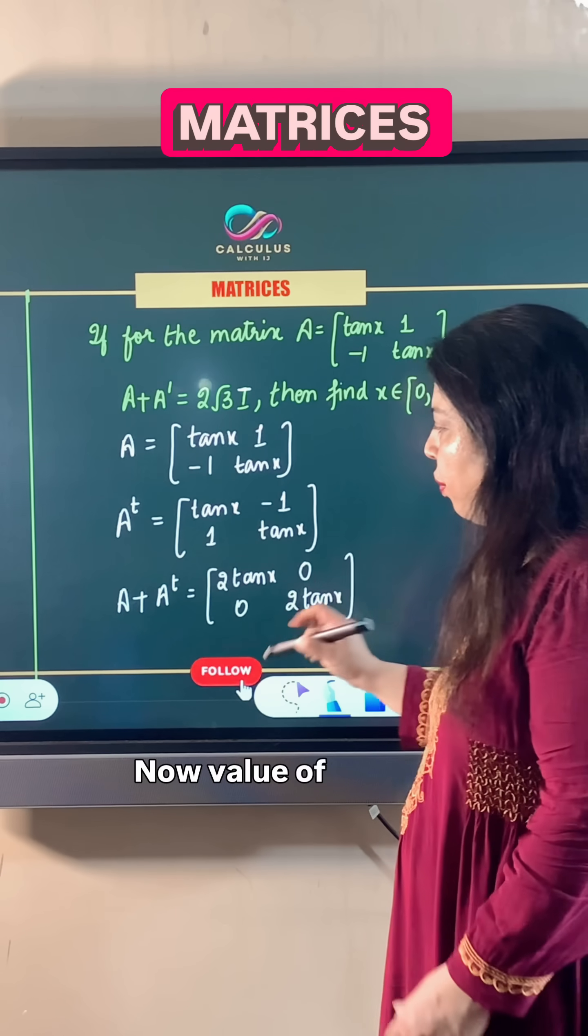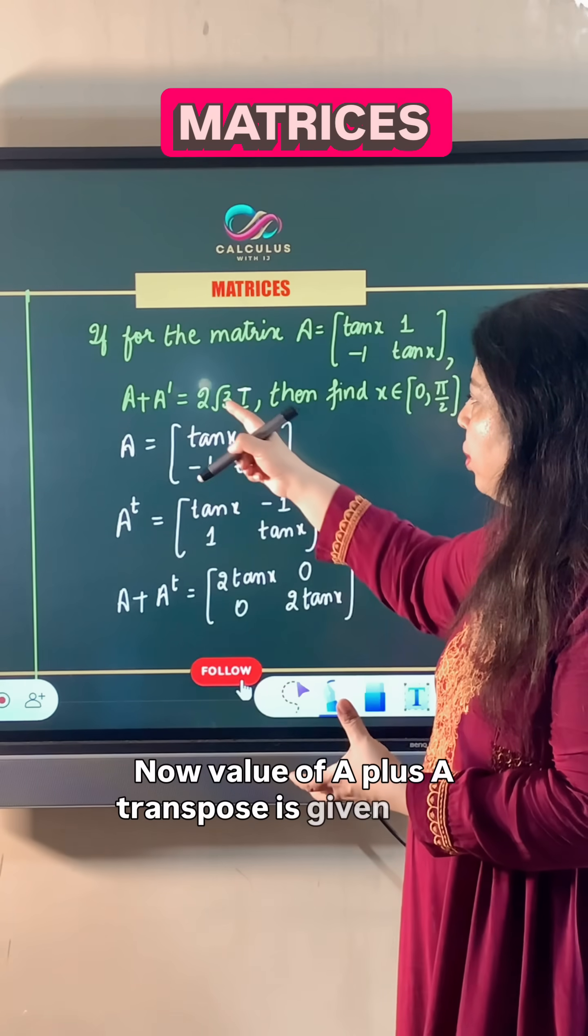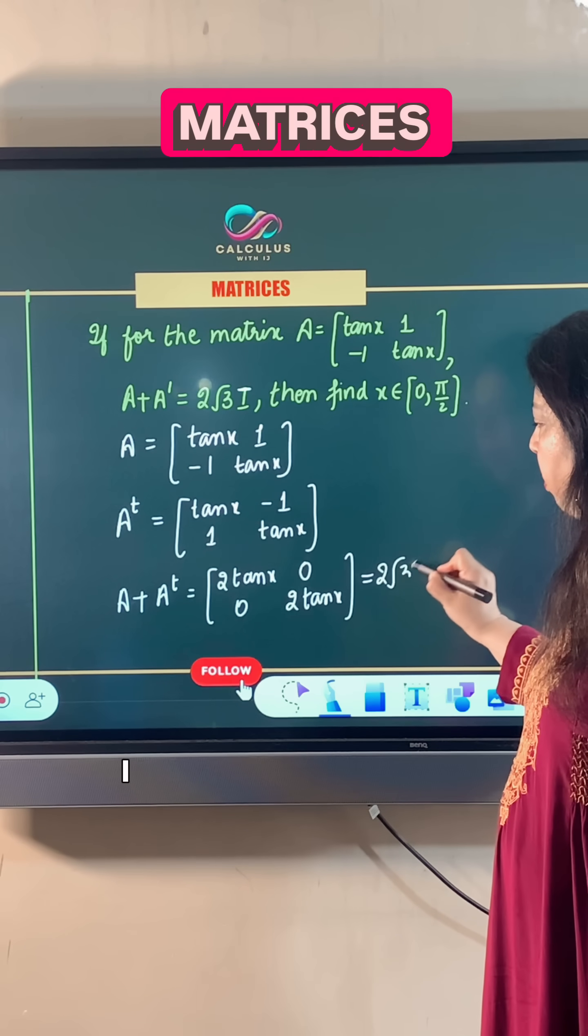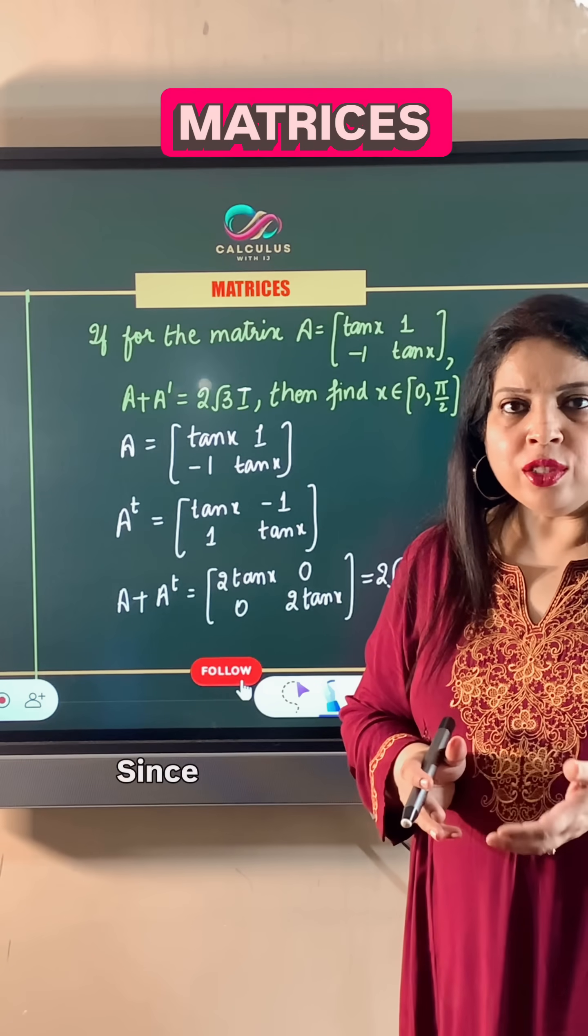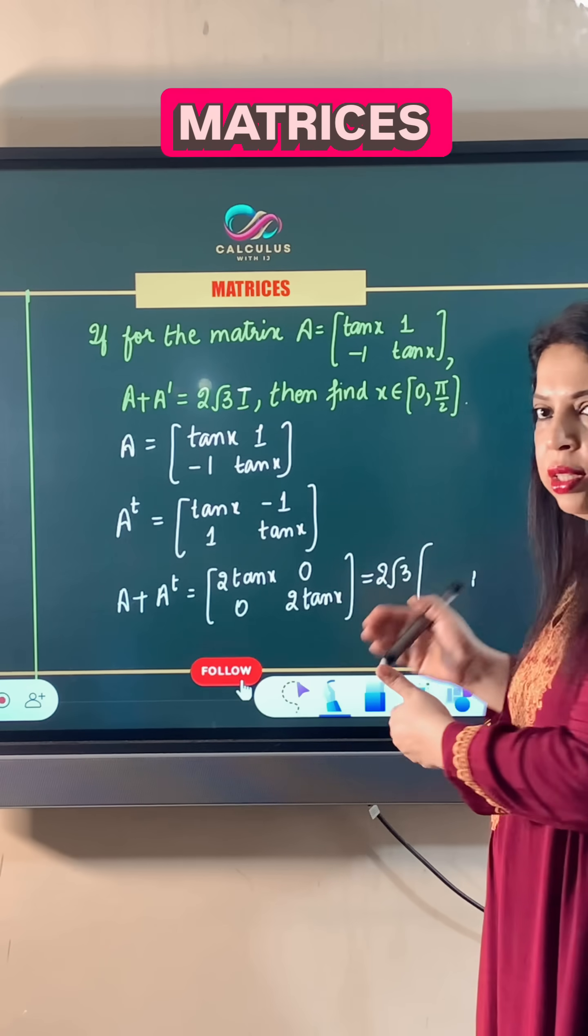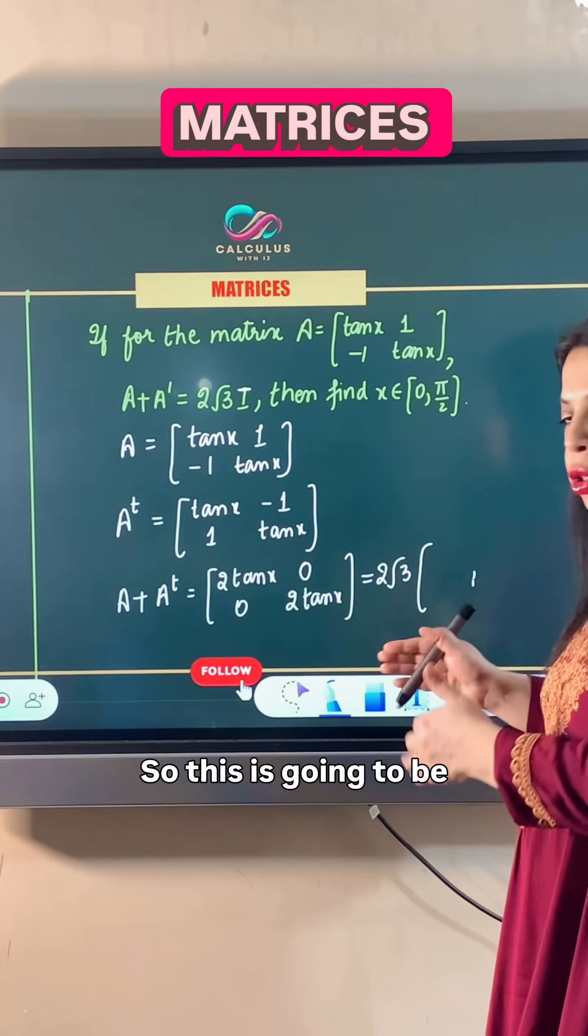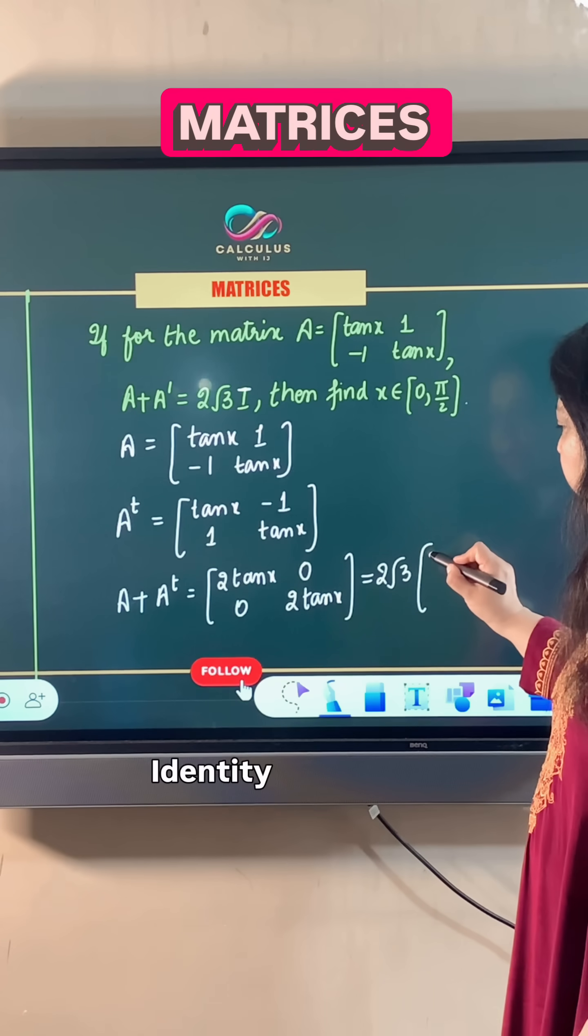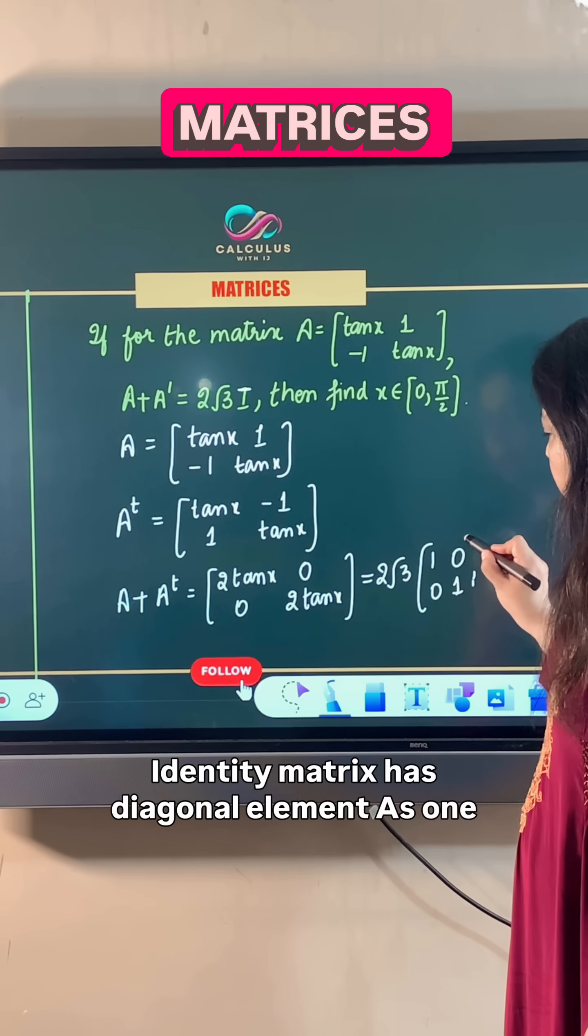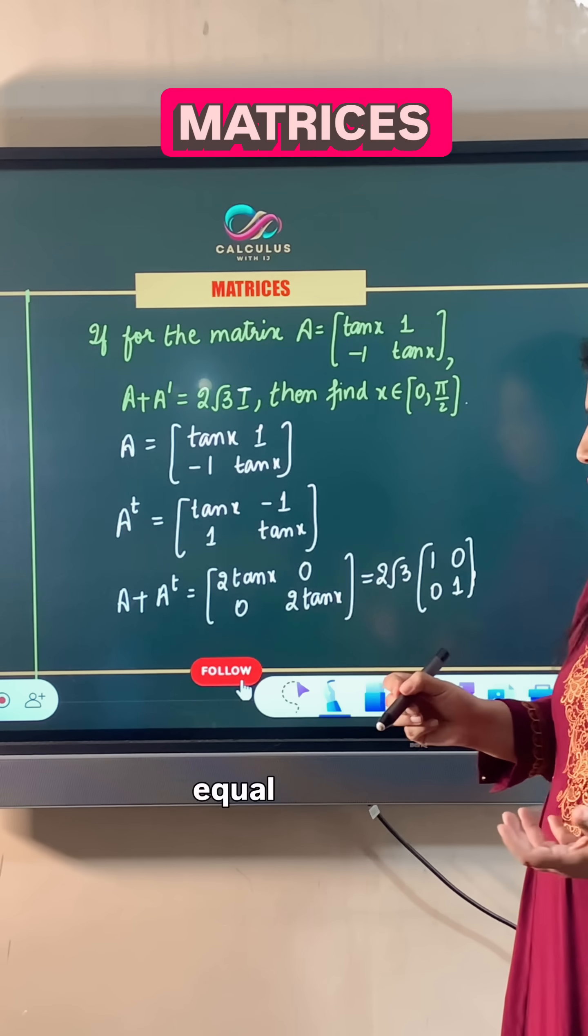Now the value of A plus A transpose is given to be 2 root 3 I, where I means identity matrix of order 2. Since we are comparing both matrices, this is going to be a 2 by 2 matrix only. The identity matrix has diagonal elements as 1 while the other elements are equal to 0.